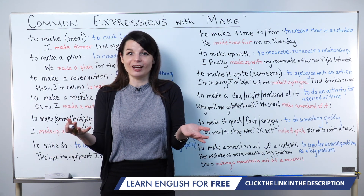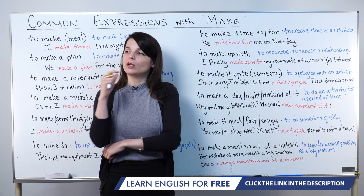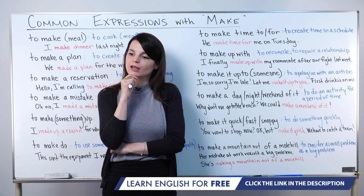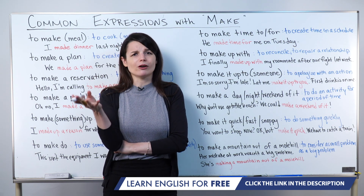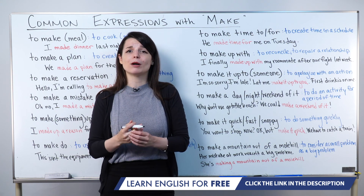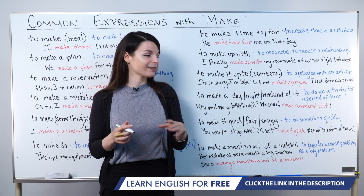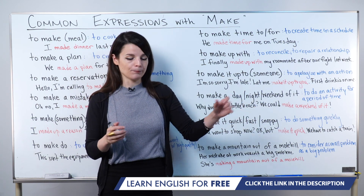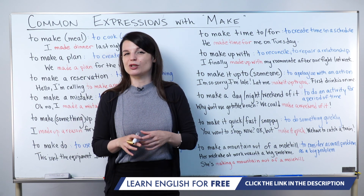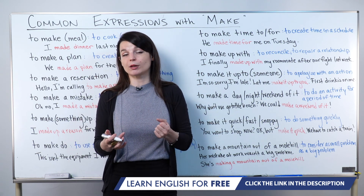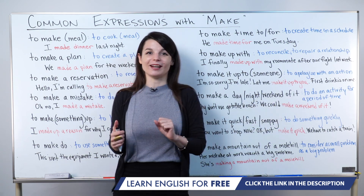You can also say to make an evening of it or to make a morning of it. We generally don't say 'make a month of it' — we typically use this for shorter activities, like a weekend trip or a shopping trip in the morning. We don't use this for very long periods of time. 'We could make a weekend of it' sounds quite natural.